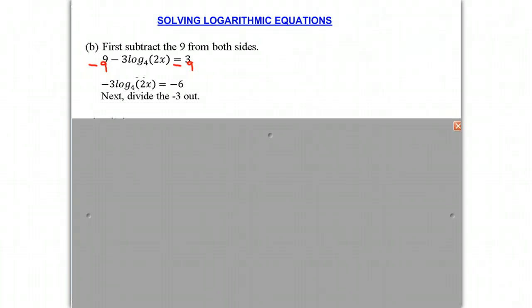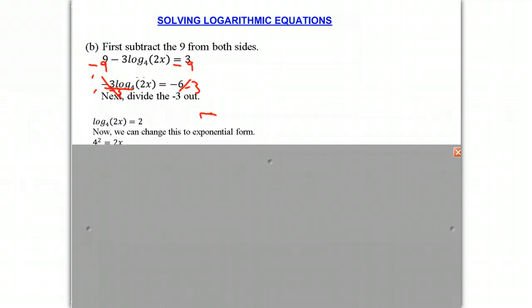And if you do that, you'll notice that you get log base 4 of 2x is equal to 2, because negative 6 divided by negative 3 is 2. And these 3s here have canceled out. And now, by definition of our exponential function, this should be the same as 4 squared equals 2x.